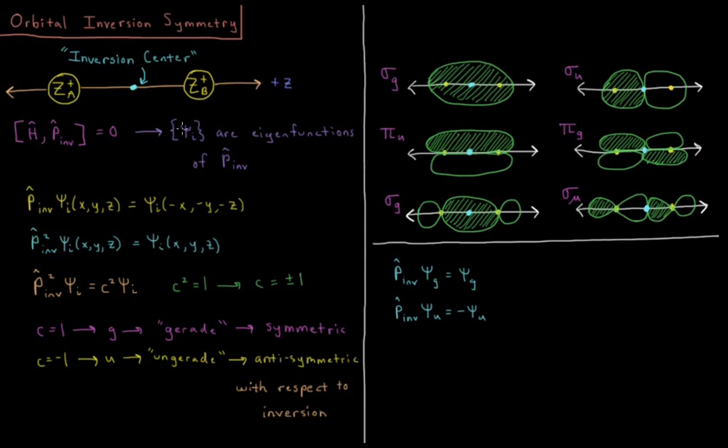So our Hamiltonian is going to commute with what we call the inversion operator. So our molecular orbitals, our orbitals which are eigenfunctions of our Hamiltonian, are also going to be eigenfunctions of this inversion operator. So when I take an orbital and I act on it with the inversion operator P_inv as I have it labeled, what I get is psi_i of x, y, z goes to psi_i of minus x, minus y, and minus z.